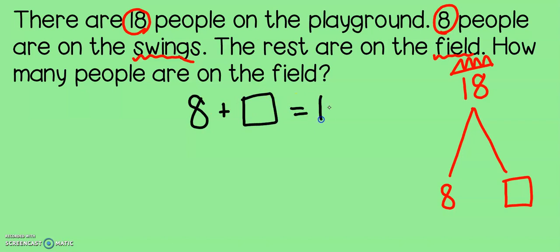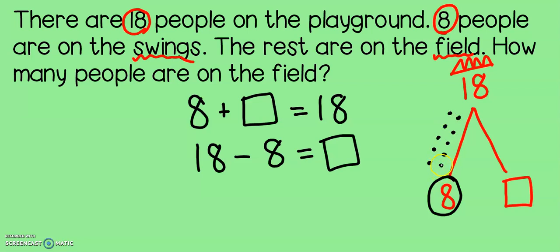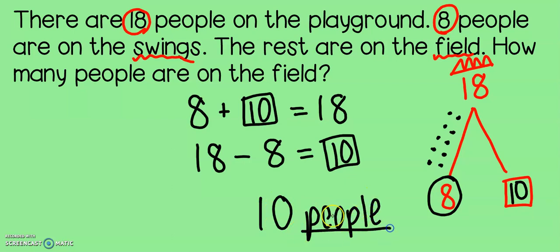Eight plus something equals 18 or 18 minus eight equals something. You can choose whether you want to start at eight and count up to 18 or if you want to start at 18 and count down eight. I'm going to start from the bottom: eight, nine, ten, eleven, twelve, thirteen, fourteen, fifteen, sixteen, seventeen, eighteen. Let's count those: one, two, three, four, five, six, seven, eight, nine, ten. Eight plus ten gives me 18. That means that there are ten people on the field.